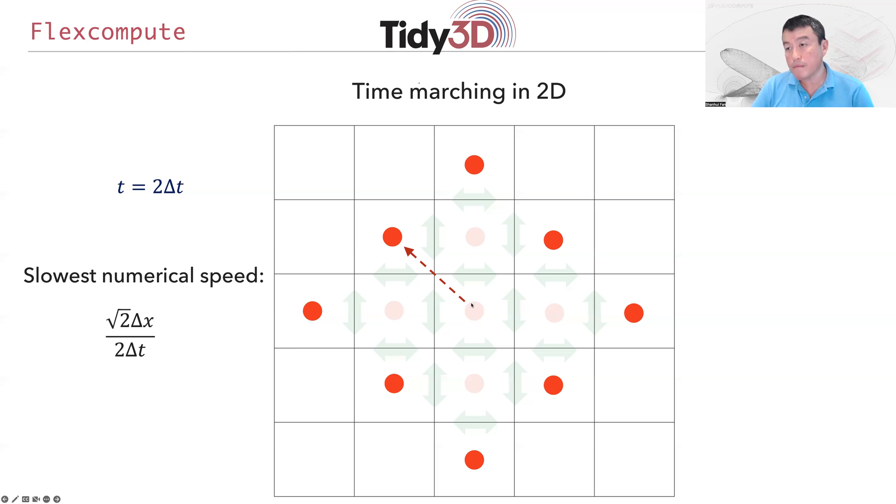From this illustration, for a distance of two times Δt, the slowest numerical speed—the shortest distance the information has progressed—is from the center of the grid to this point, corresponding to a distance of √2 times Δx. The slowest numerical speed is √2 times Δx divided by 2Δt.